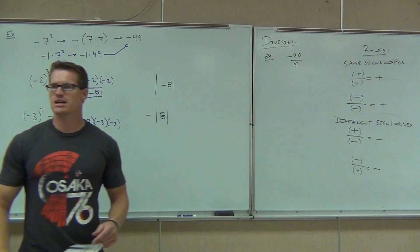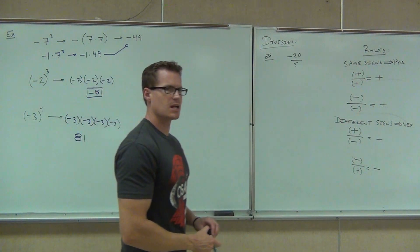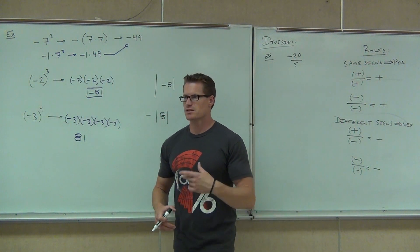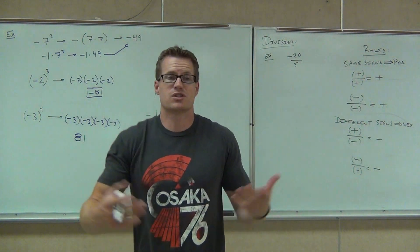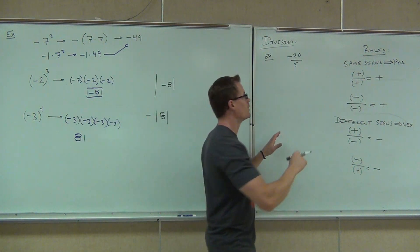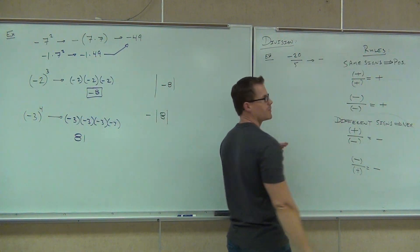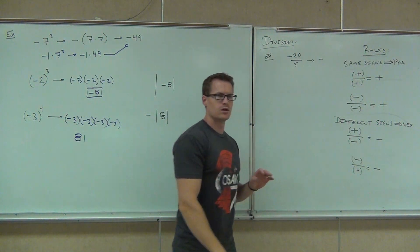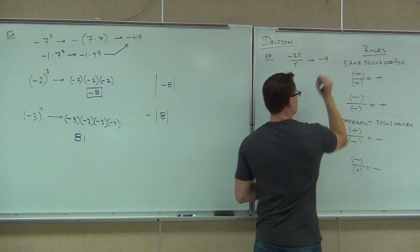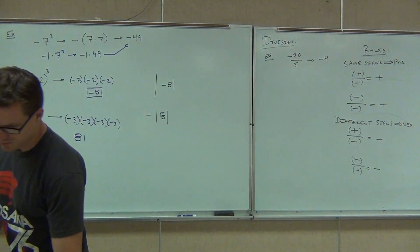So in our case, negative 20 divided by positive 5 — should we be getting a positive or a negative here? Negative. We're asking the same question we did for multiplication: figure the sign out first. We don't even have to do the math until we figure the sign out. So definitely negative — how much? Four. Good. Then we just do the division. Very similar to multiplication.